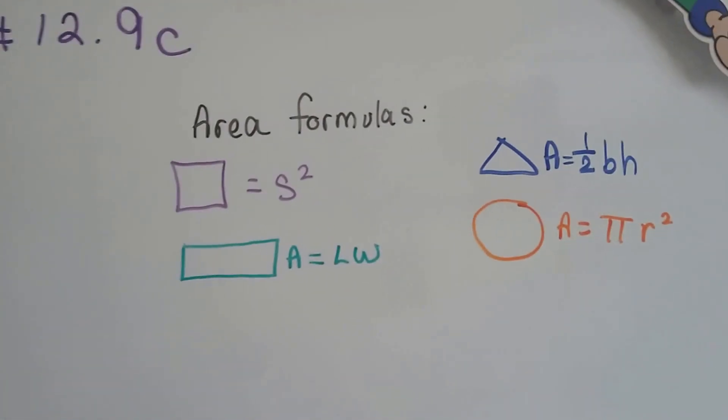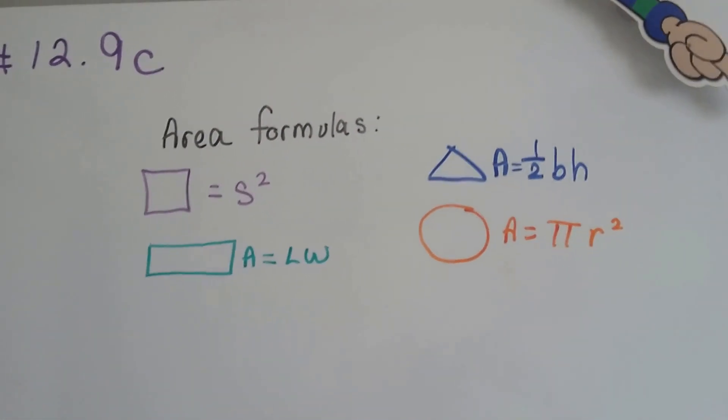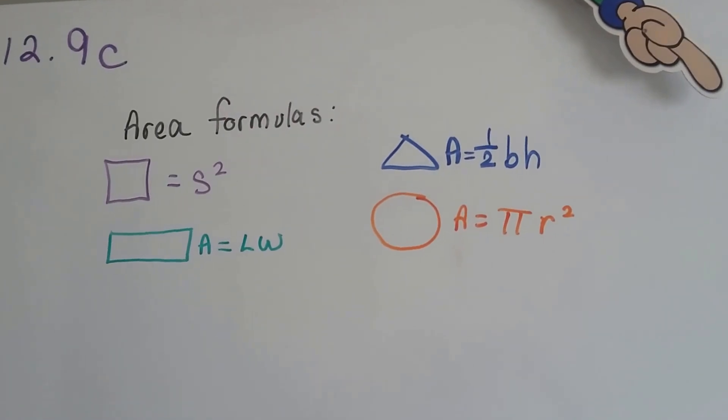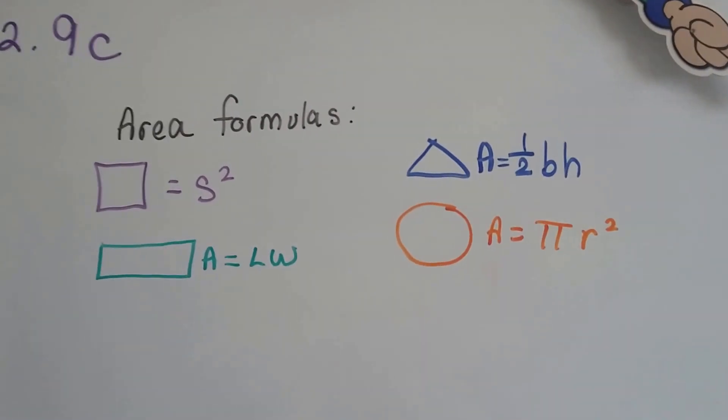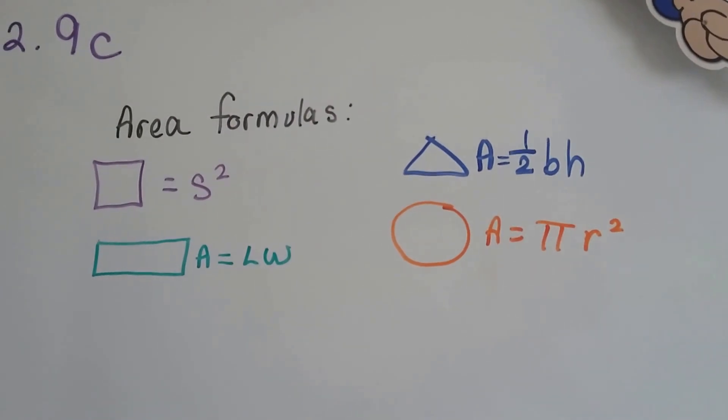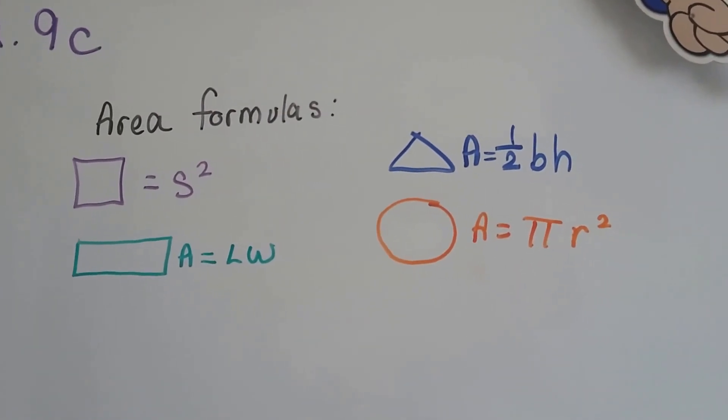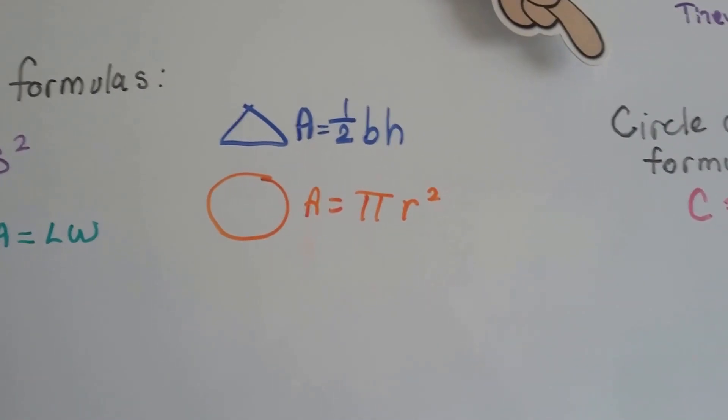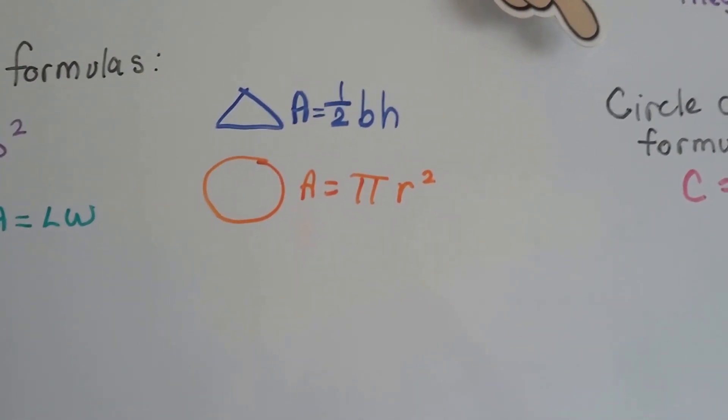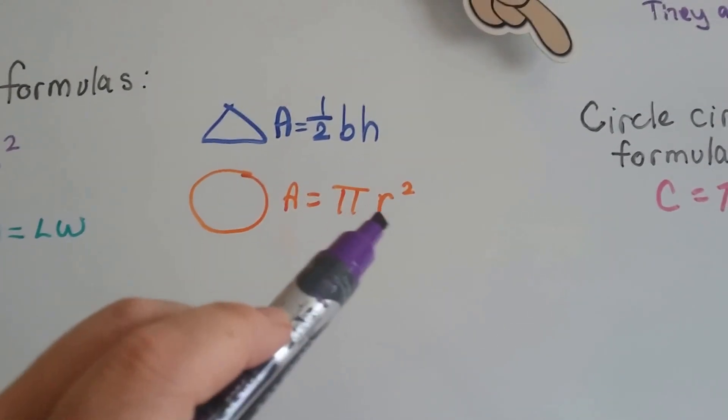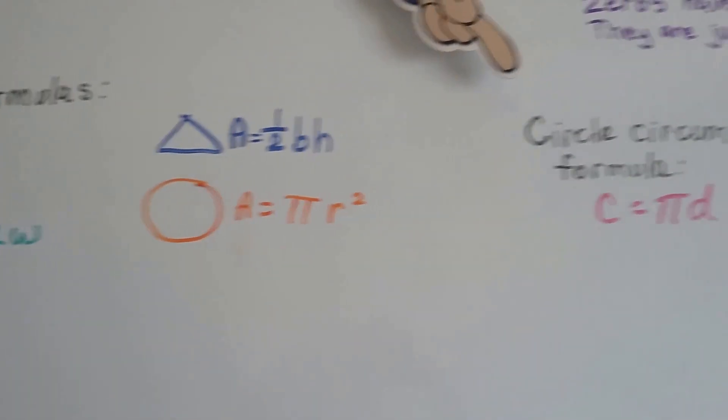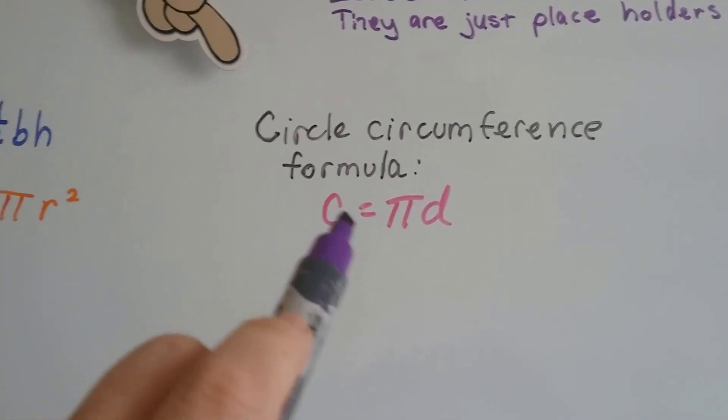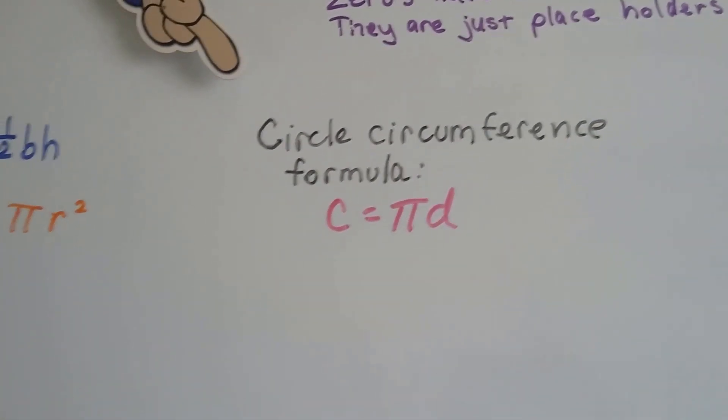So here's our formulas. If you saw the last two videos, 12.9 and 12.9b, the area formula for a square is s squared, that's side times side. For rectangle, it's the length times the width. For a triangle, it's half the base times the height. And for a circle, it's pi times radius times radius. You have to remember that the circle circumference formula is the circumference is pi times the diameter.